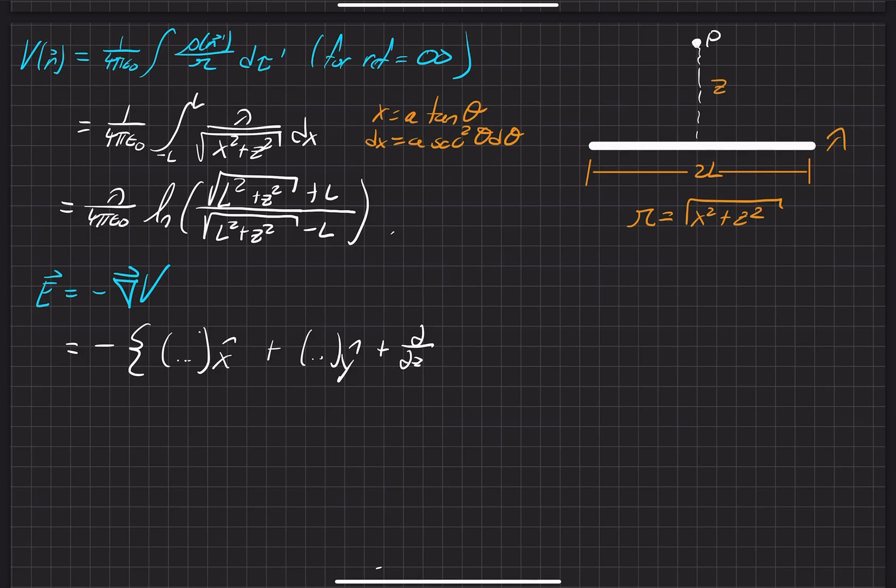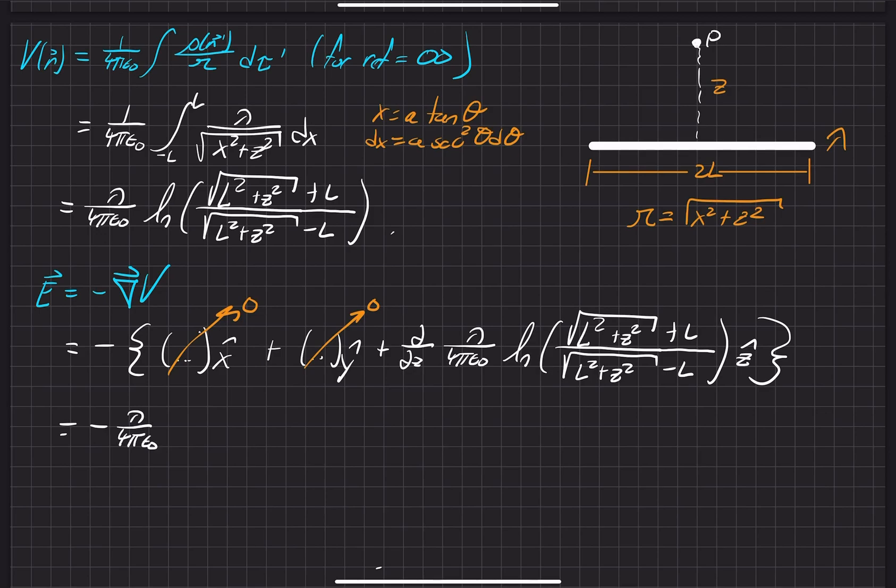Again, we have a negative, and then we have our gradient of the X component, which ends up being zero. Gradient of the Y component, which ends up being zero. That's just because we have no X or Y components for this one as well, thanks to symmetry. And then our gradient of the electric potential in respect to the Z component, which points in the Z hat direction.